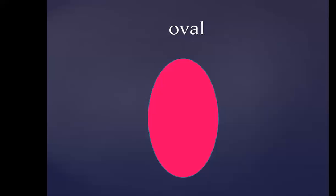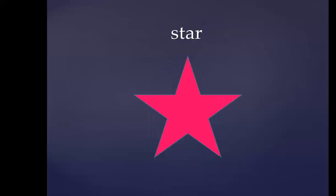It's an oval, it's an oval, how can you tell? How can you tell? It looks like an egg, it looks like an egg. Yummy yummy! Let's go to the other shape. This is a star. Say star. Very good!